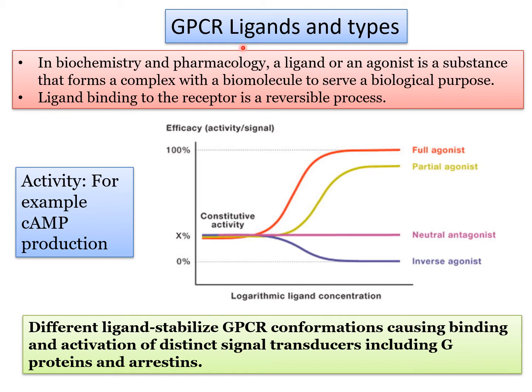Previously the terms ligand and stimulus were mentioned — for example physical or chemical stimuli that can activate a G protein-coupled receptor. In biochemistry and pharmacology, a ligand or agonist is a substance that forms a complex with a biomolecule to serve a biological purpose. Most chemical stimuli such as proteins, peptides, hormones, and sugars are ligands or agonists, but it is wise not to consider light or temperature as ligands.